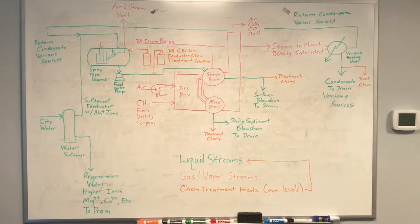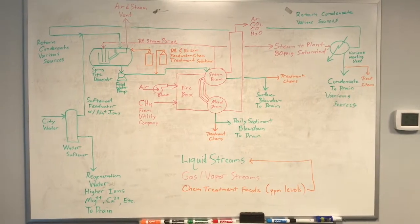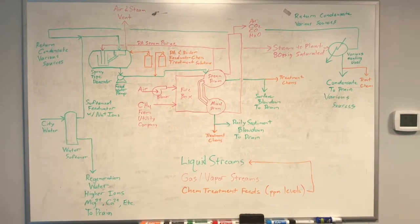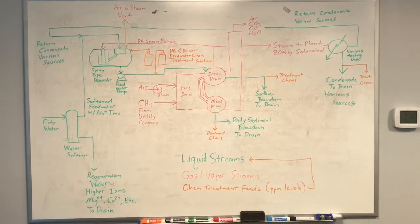Hey folks, Brad Sutleff here for another chemical engineering concept video. Today we're going to talk about steam boiler systems, process flow diagrams, and material balances. We're also going to take a walk out in the field and see what all this stuff looks like in real life for our small batch processing facility here in Lock Haven, Pennsylvania. We'll start with the process flow diagram for the boiler system, which I have drawn up here on the whiteboard in our conference room.